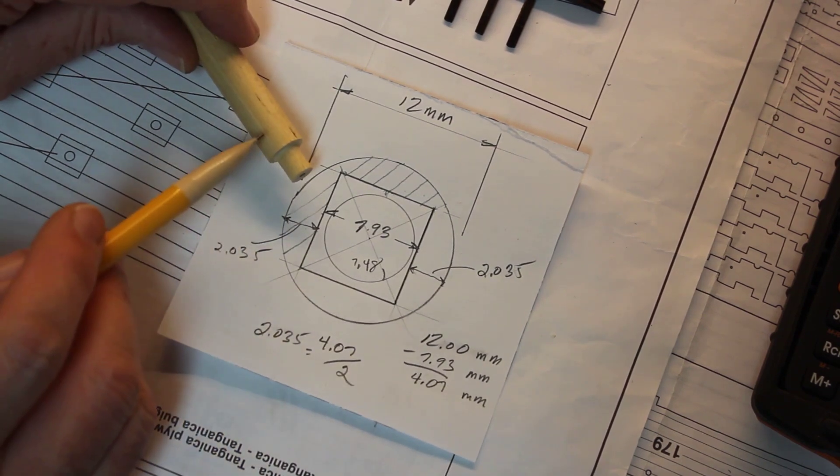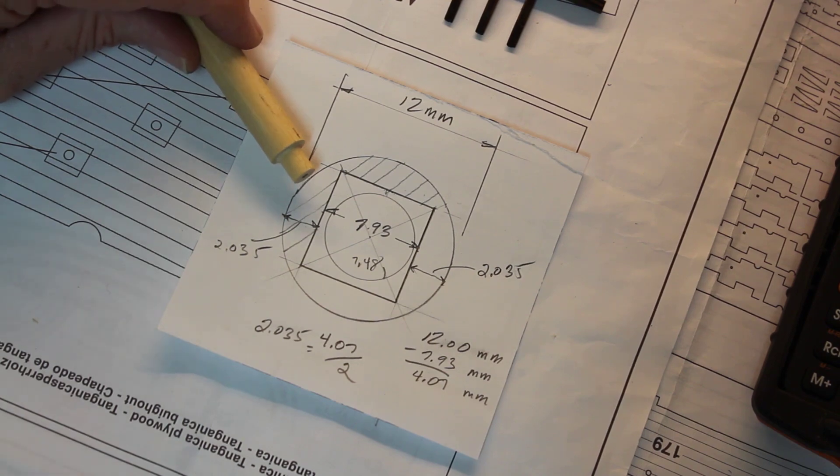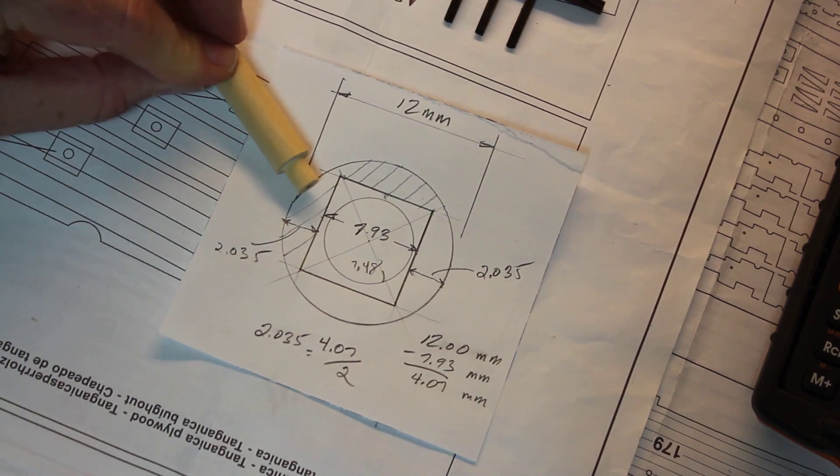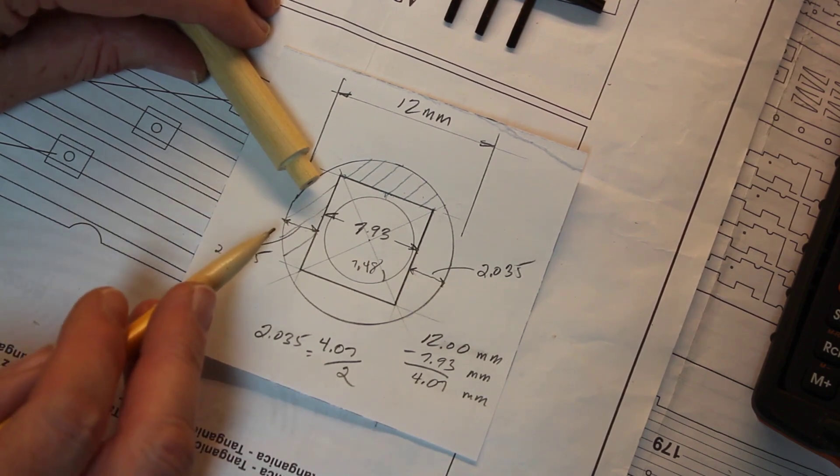We know that wood is not perfect. If this were a rod of brass or steel, we could really get down to the thousandths and ten thousandths.